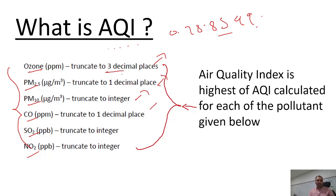For ozone you have to truncate to three decimal places. For PM 2.5 it is one decimal truncation. For PM 10 you consider only the integer part — so if it is 1.1010, just consider 1. Similarly for SO2 and NO2 you truncate to the integer, and for CO it is again to one decimal place.